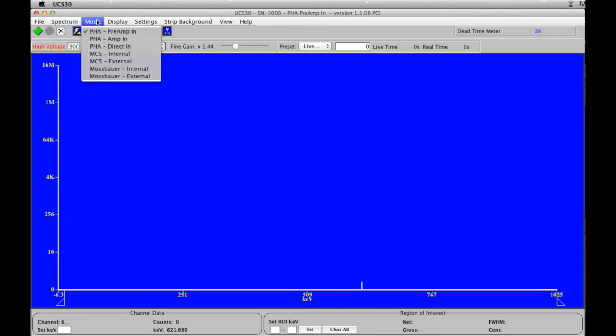The mode is set at PHA preamp N, that's peak height analysis, that is appropriate for this detector configuration and for our application, which will be isotope identification. MCS is also available, that's multi-channel scaling that can be used for half-life studies, and Mossbauer modes are available as well.